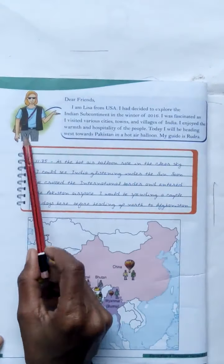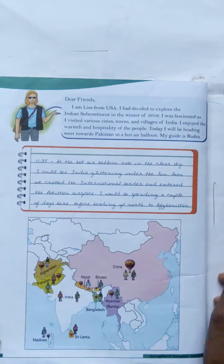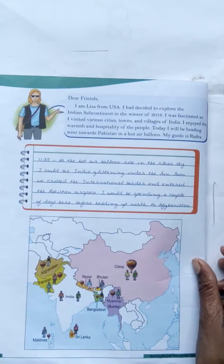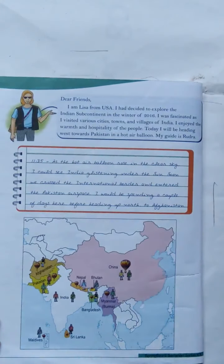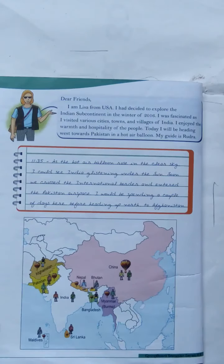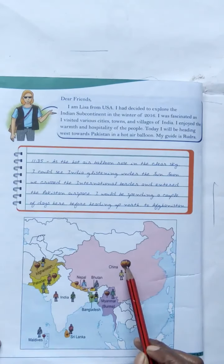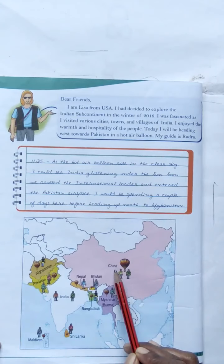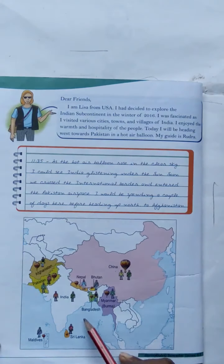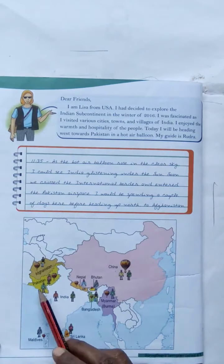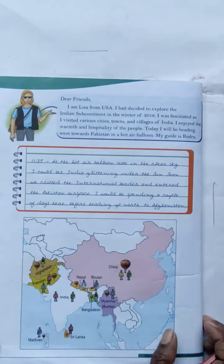She is Lisa. She came from the USA. She had decided to explore the Indian subcontinent in the winter of 2016. She was fascinated as she visited various cities, towns, and villages of India, and enjoyed the warmth and hospitality of the people. Today she will be heading west towards Pakistan in a hot air balloon. She visited China, Nepal, Bhutan, Myanmar, Bangladesh, Sri Lanka, Pakistan, Afghanistan, and India.